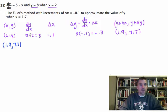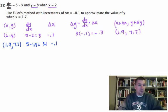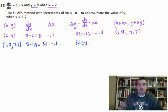I'm going to do dy/dx, which means that I'm going to take 5 minus the x coordinate, 1.9. That's going to be 3.1 times delta x, negative 0.1. Delta y is equal to dy/dx times delta x, so that's going to be 3.1 times negative 0.1, which is going to be negative 0.31.